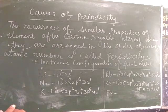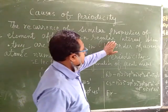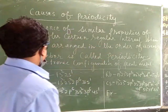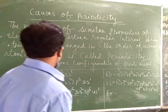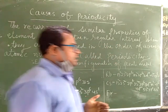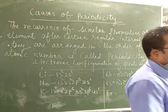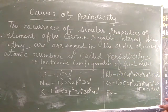The recurrence of similar properties of the element after certain regular interval when they are arranged in the order of increasing atomic number is called periodicity. If some element of property is built in a regular interval, it will be periodicity.